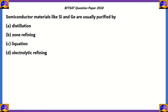The next question: semiconductor materials like silicon and germanium are usually purified by which method — distillation, zone refining, liquation, or electrolytic refining? Let's look at each process and which metals they are used for.